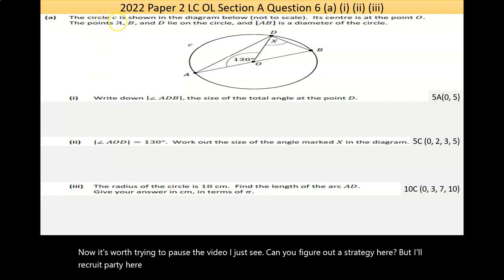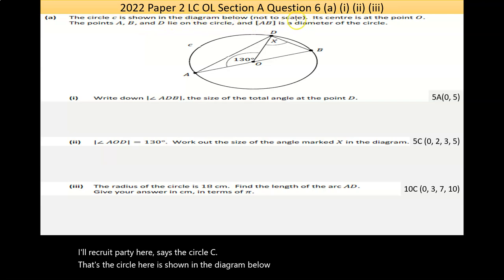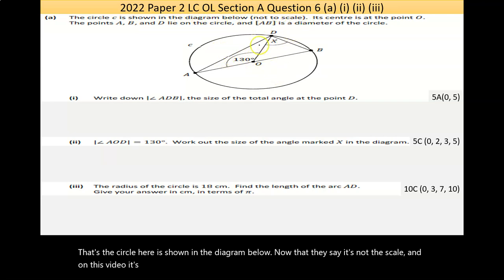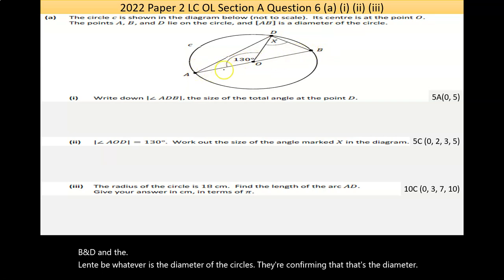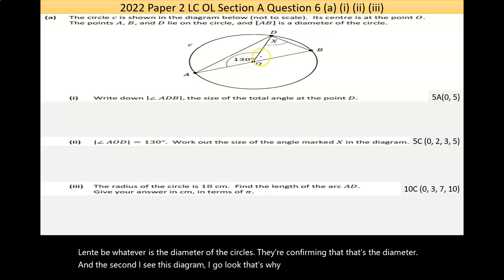Part A says the circle C is shown in the diagram below. It's not to scale, and on this video it's kind of stretched so it would look slightly different in the exam paper. Its center is at point O, and the points A, B, and D are shown, with AB being the diameter of the circle.